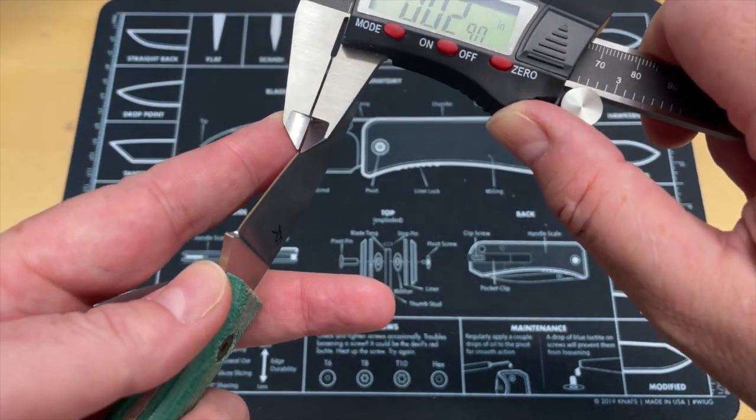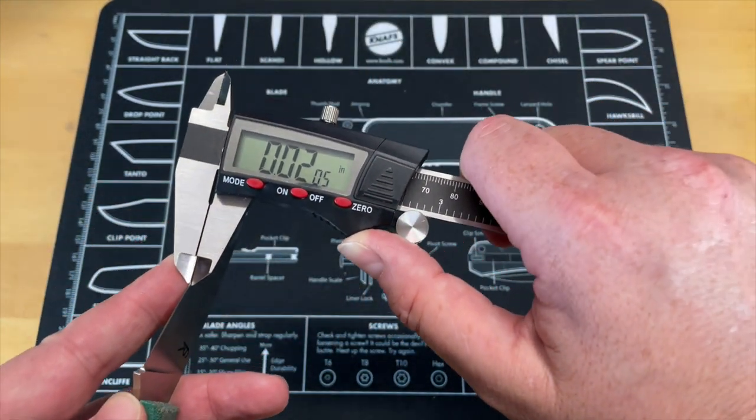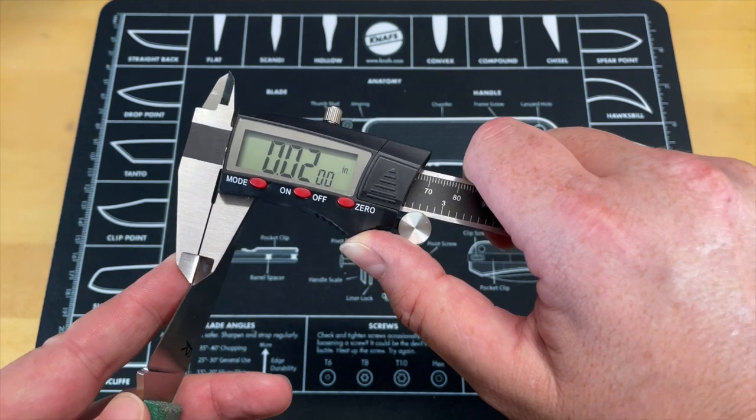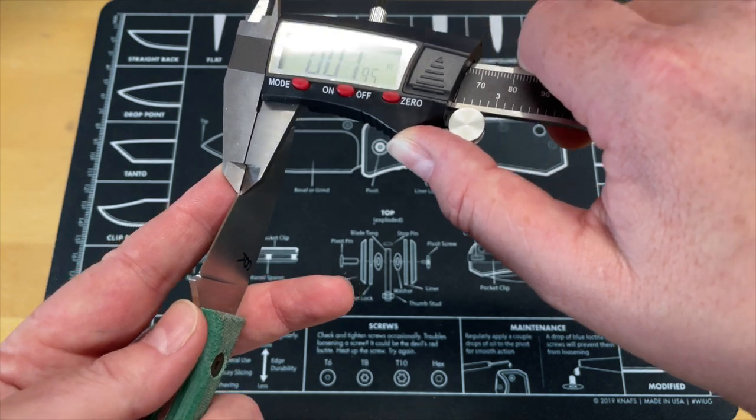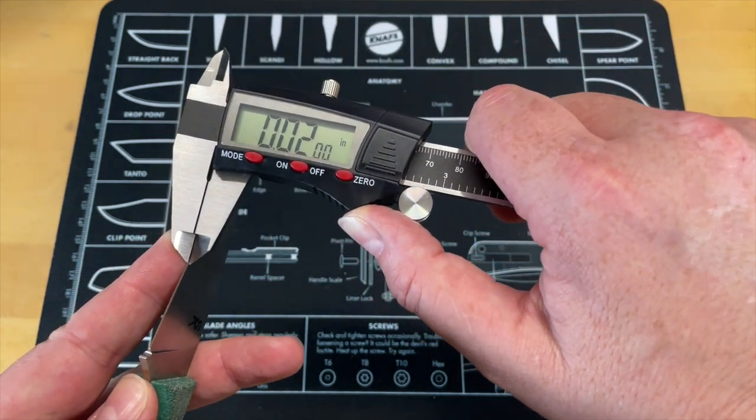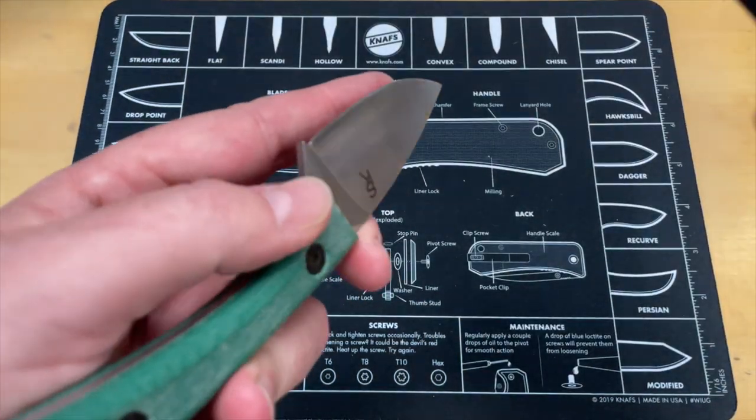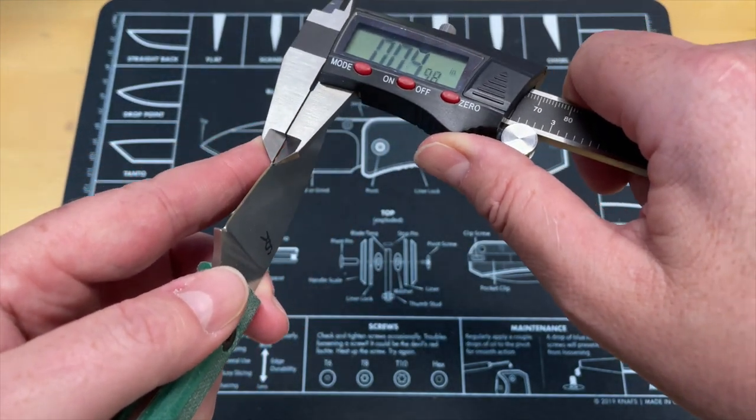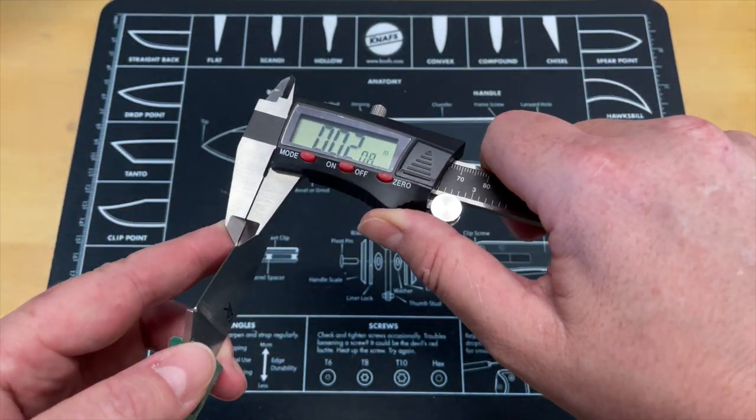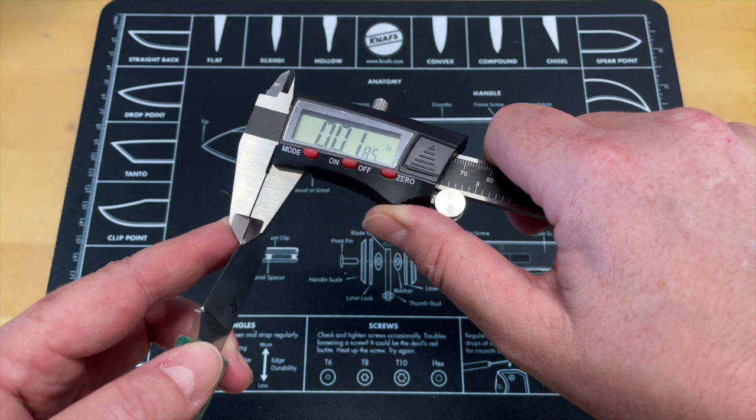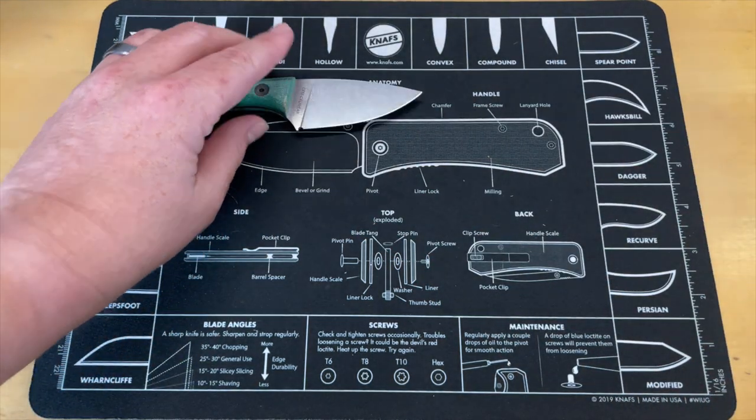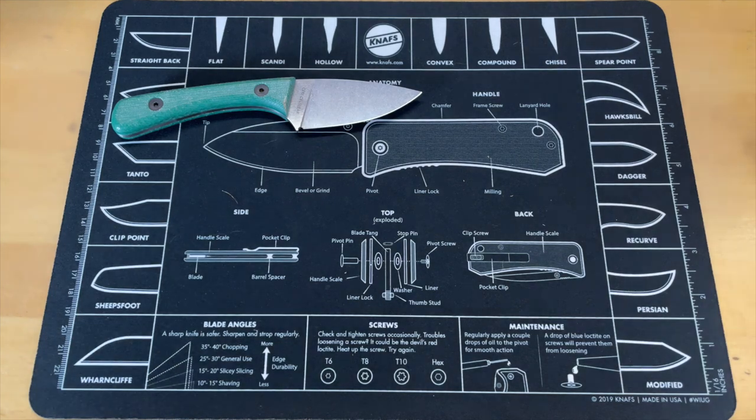So right behind the edge on this, 0.020. So actually I think I slid up a little bit, but let's get right at the edge. Yeah, about 0.020 right there behind the edge. Measure it one more time just to make sure I'm not telling stories out of school. Yeah, 0.019, 0.020-ish. So to give you a perspective on that, the feeler gauge that I use that is a 0.020.